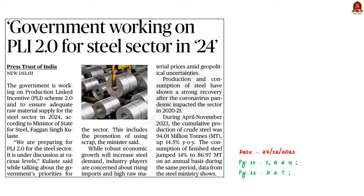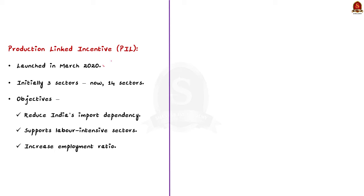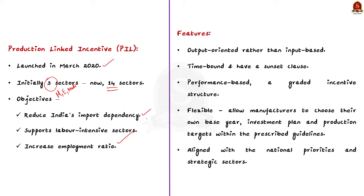Look at this news article — the government is working on a Production Linked Incentive scheme 2.0 to ensure adequate raw material supply for the steel sector in 2024. The PLI scheme was launched in March 2020 and initially targeted three industries: mobile and allied component manufacturing, electrical component manufacturing, and medical devices. Currently, the scheme covers nearly 14 sectors. The main objectives are to reduce India's import dependency, scale up domestic manufacturing capability, increase import substitution, and enable employment generation. The PLI scheme also invites foreign companies to set up units in India and encourages domestic enterprises to expand their production units.